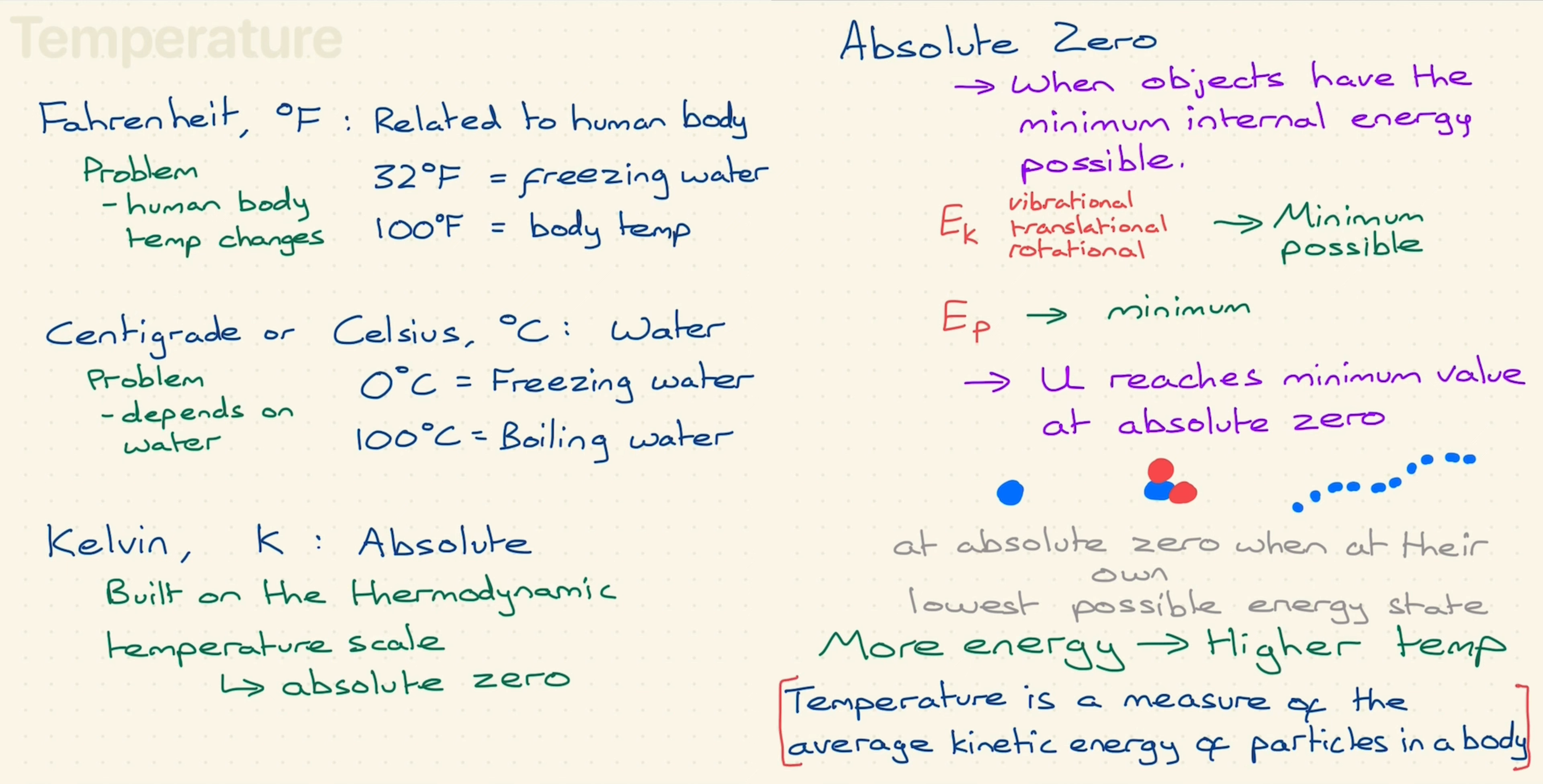That's nice but not particularly useful, as it is really hard to measure. Instead, William Thompson, First Baron Kelvin, also known as Lord Kelvin, had the idea of using absolute zero as the lower fixed point and the triple point of water as the upper fixed point.